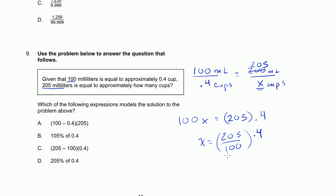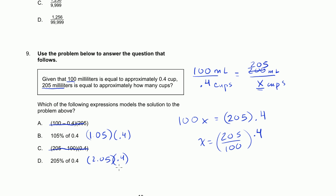Let's see if any of the choices look like what we have — something times 0.4. This one has subtraction in it, so that's not our answer. This one also has subtraction, not our answer. 105% of 0.4 is the same thing as 1.05 times 0.4. 205% times 0.4 is the same thing as 2.05 times 0.4, which is exactly what we have here.